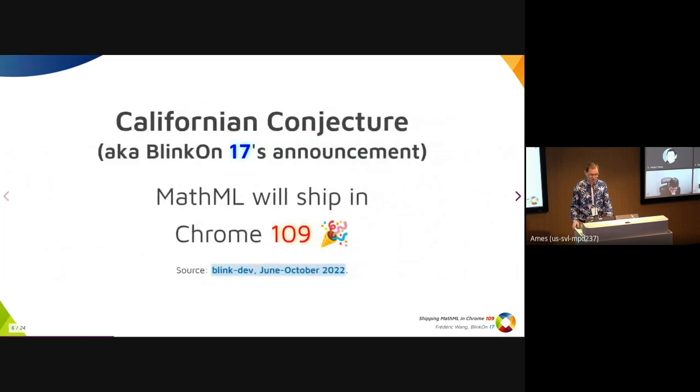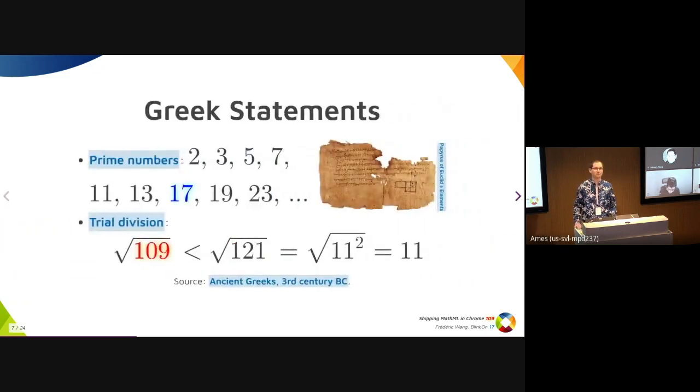The solution is 109, you get the nine, and it's actually exactly the version of Chrome where we expect to ship mathematics. The status is we got approval from API owners, the flag is already turned on in Canary so you can already experiment, and if everything goes as expected we'll get native mathematical support in Chrome next January. You can do it like the ancient Greeks and verify that Blink-on 17 and Chrome 109 are actually using prime numbers, which I think is an interesting property.